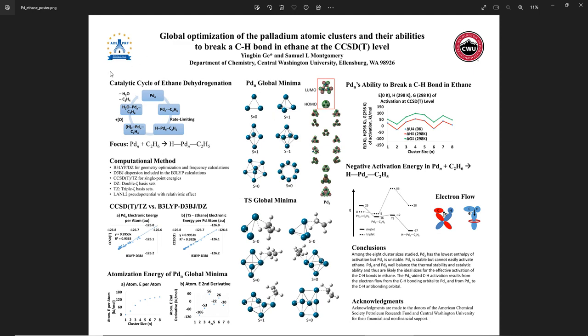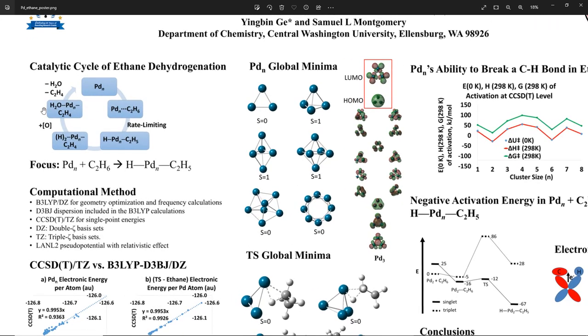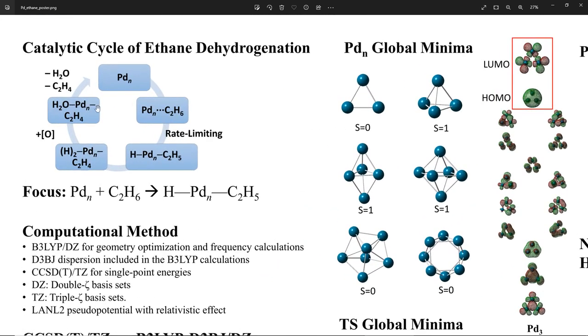First, let's look at the catalytic cycle of ethane dehydrogenation. We can see this palladium atomic cluster can remove two hydrogen atoms from ethane to form ethylene. The first hydrogen removal is the rate-limiting step. So we focus on this chemical reaction in which this palladium cluster inserts into a carbon-hydrogen bond of ethane.